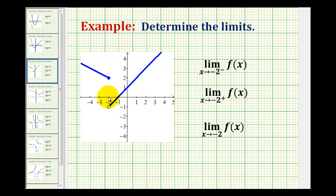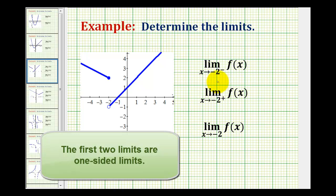Let's take a look at some one-sided limits graphically. Notice for this first limit we have the limit as x approaches negative 2 from the negative side, or left side, and for the second limit we have the limit as x approaches negative 2 from the positive side, or right side, of f of x. It's important when determining limits to pay attention to the notation, because a slight variation means something quite different.